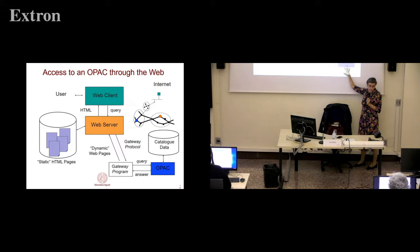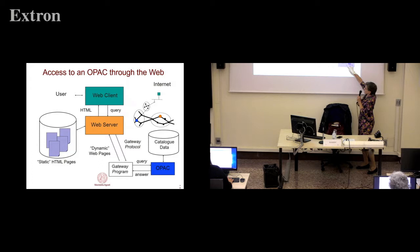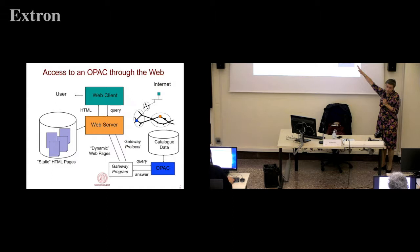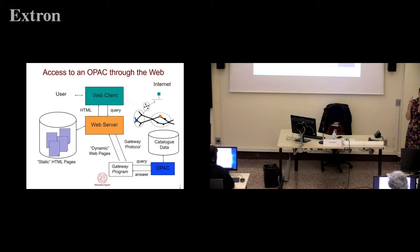The OPAC works, prepares the answer, passes it to the gateway program, which produces what is called a dynamic page — dynamically produced at the moment of the request — and sends it to the web server, then to the web client. So we speak about a three-level architecture: one level is the web server, the intermediate level is the gateway program, and the third level is the program application — in this case the OPAC. The application can be of different types: a database, student enrollment software, a newspaper, a bank payment system.